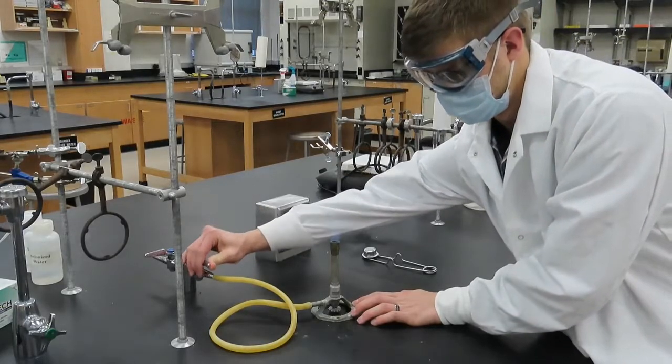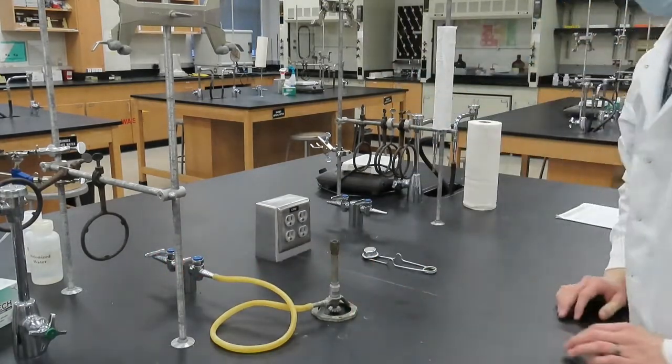To turn off the Bunsen burner, carefully reach around the burner and turn the gas valve in the lab bench until it's fully perpendicular again.